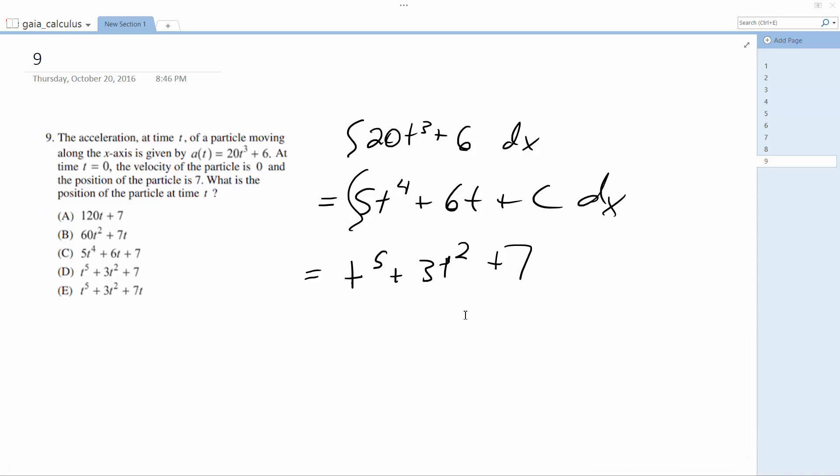Normally we'd have c, but you've got to be careful here because they say when the velocity of the particle is 0. So when you plug in 0 here, you're still going to end up with 7. So actually this should be a 7.